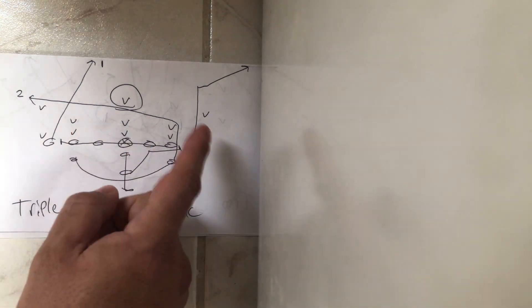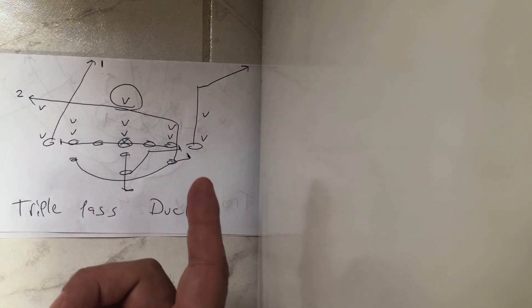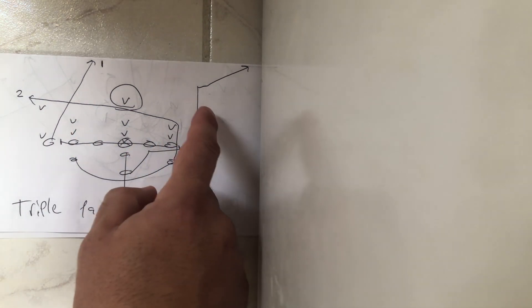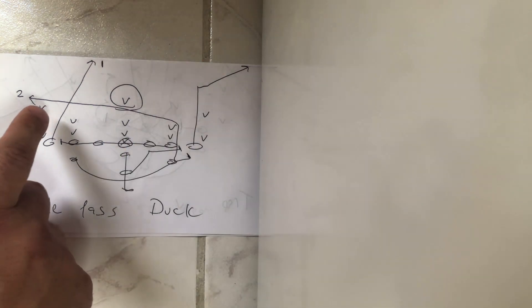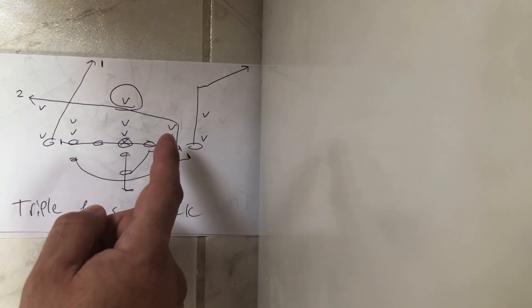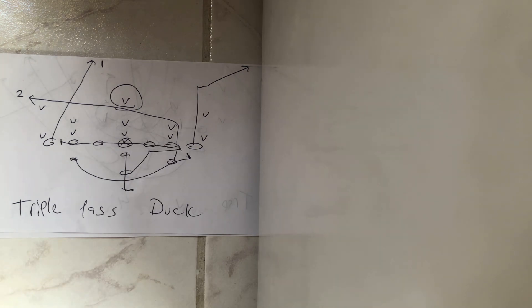Pretty much exclusively, it's cover three. So he's going to try to get over the top of the corner route and he's going to try to get depth on the cutoff route there. And you're going to hit the drag right underneath.